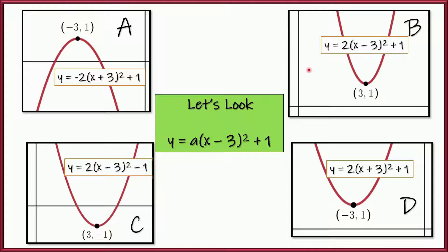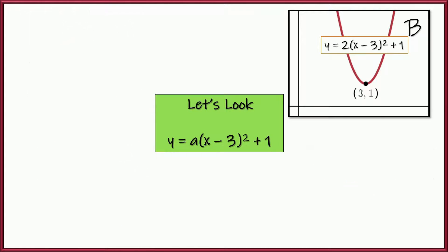Maybe it's B. Graph B's equation is y equals 2 times x minus 3 squared plus 1. The a value is fine — it could be anything. x minus 3 squared matches x minus 3 squared. And then plus 1 matches plus 1. So B is the answer. Look at the vertex: 3 comma 1. The sign of h is opposite: the x-coordinate is the opposite of that number in the parentheses. The k value matches perfectly. B is correct.